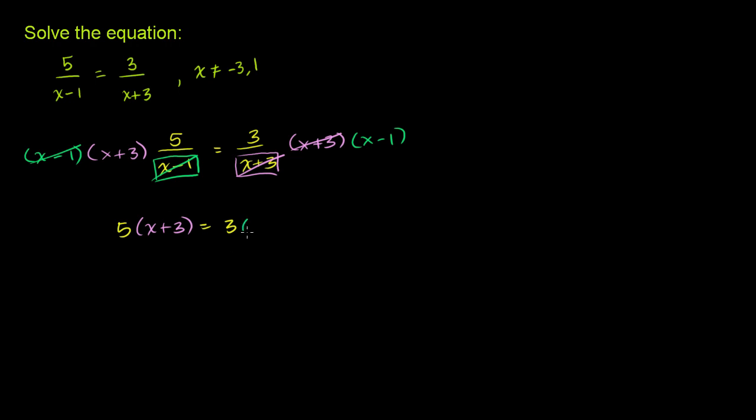And all we did is we multiplied both sides of the equation by both denominators, by x plus 3 times x minus 1. And this is where the whole notion of cross-multiplying comes from. When we did that, it looks like we just took 5 times x plus 3 is equal to 3 times x minus 1. Which is a legitimate thing to do, but it just comes from the idea of multiplying both sides by both denominators, essentially in one step.